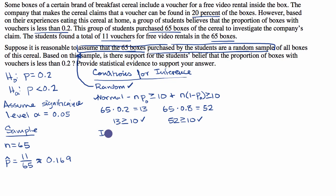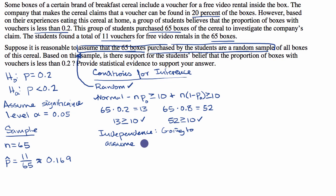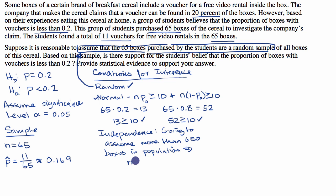The last condition is independence. We aren't sampling these boxes with replacement, so we need to feel good that they are less than 10% of the population of boxes. They don't tell us that explicitly, but it's good practice to just say we're going to assume more than 650 boxes in the population, which would imply that n is less than or equal to 10% of the population, allowing us to check off the independence condition.